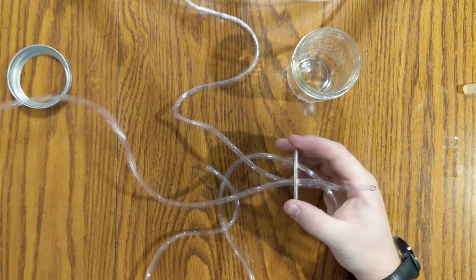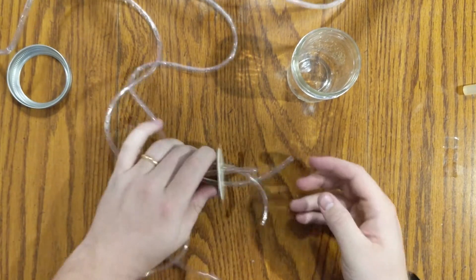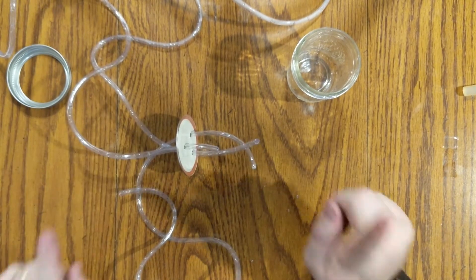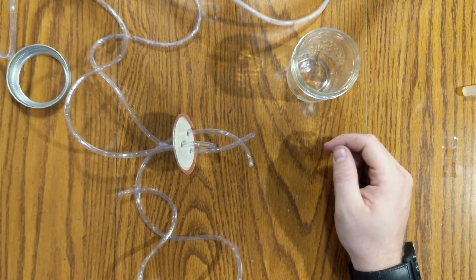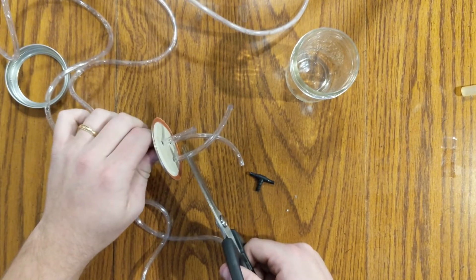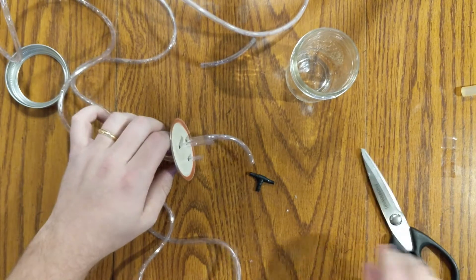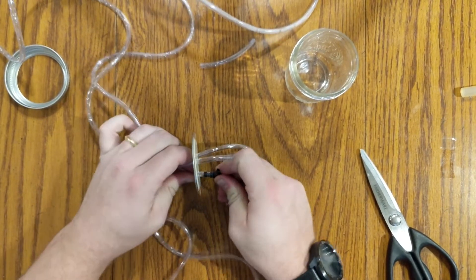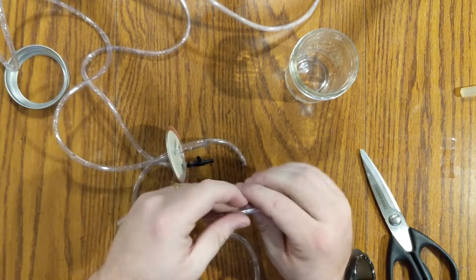So note that one of the hoses is considerably shorter than the other. This will be your air hose. So now that we've got it placed, we want to take a pair of scissors and cut just underneath the lid.